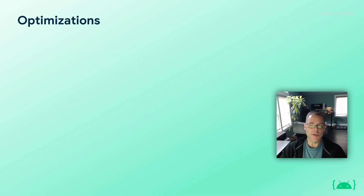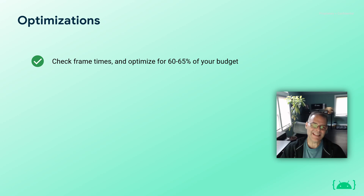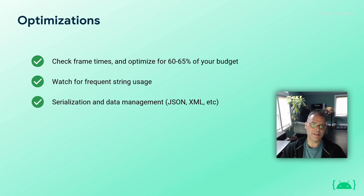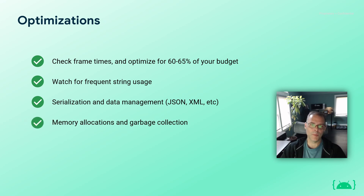Items to remember with regards to optimizations in Unity when targeting Android: keep your frame times in check, and remember to optimize for about 60 to 65% of your budget time to keep thermal throttling and warnings at bay. Watch for frequent string usage and allocations — these can ultimately cause problems with garbage collection. Watch your serialization and data management, especially if you're working with JSON and XML text-based formats. Know when you're going to be reading information and consider going to alternative formats instead of very text-heavy processing. Your memory allocations and garbage collection can have an enormous impact on performance and stuttering.